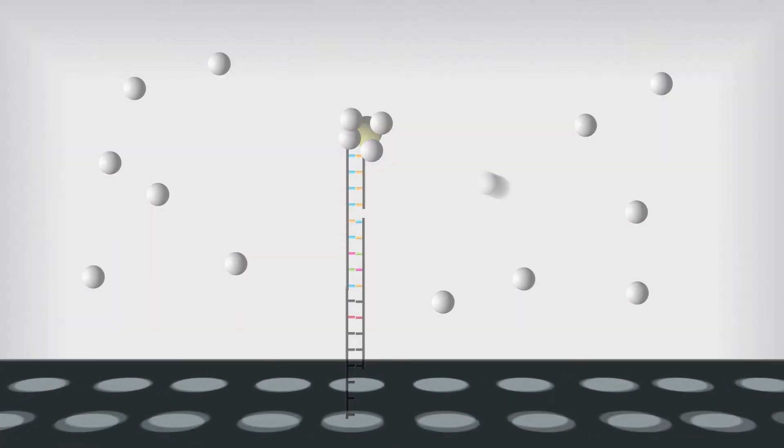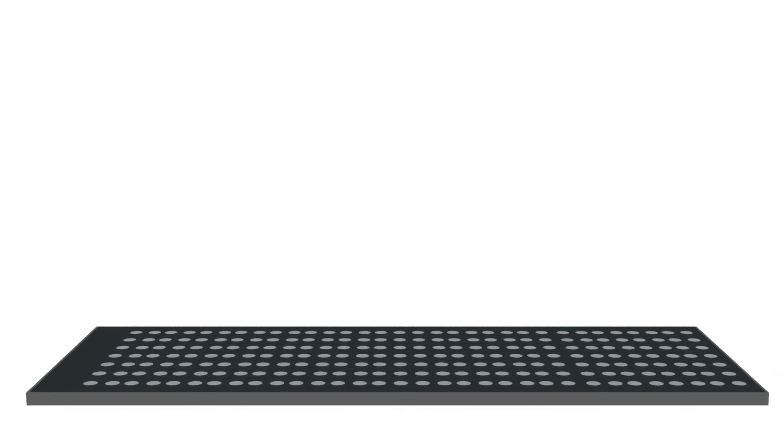This method analyzes slides covered in spots, called nanogrids, to detect the presence or absence of targets. Each spot contains a strand of DNA, or probe, complementary to the various targets of interest.